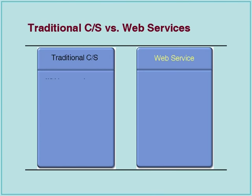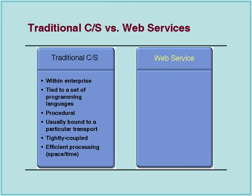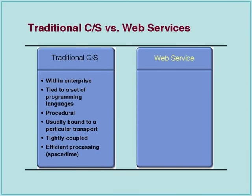Here is the comparison between traditional client-server systems and web services. Traditional client-server systems are within an enterprise boundary — they don't cross boundaries. They're tied to a set of programming languages, implemented in COBOL, C++, Java, etc. They are bound to a specific transport: if I use RMI I am bound to JRMP; if I use CORBA I will use IIOP. And they are tightly coupled.